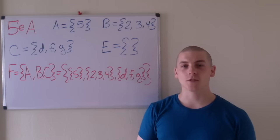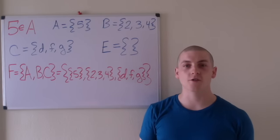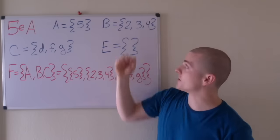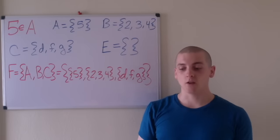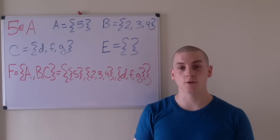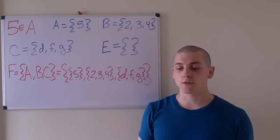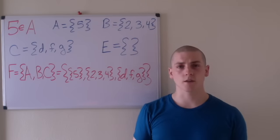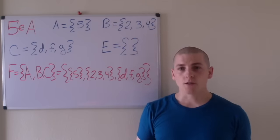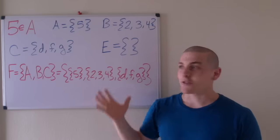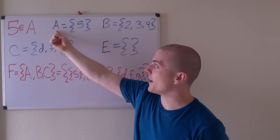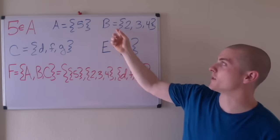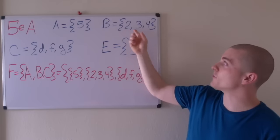So what does a set actually look like? There are two common types of notation for sets, and the one I'm introducing in this video is roster notation. It's just curly braces with elements inside separated by commas, which is very similar to JavaScript. The only difference being that in math we use curly braces, and in JavaScript we use square brackets. So the set A equals the set containing the element 5. The set B equals the set containing elements 2, 3, and 4.